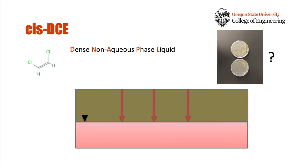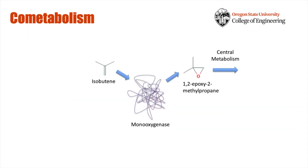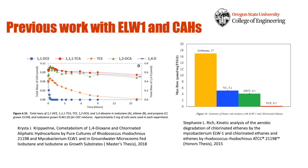So where does ELW1 come in? Remember that monooxygenase that ELW1 uses to degrade isobutene? Previous work done with ELW1 demonstrated ELW1's capability to degrade many CAHs, including CIS-DCE, via co-metabolism using this monooxygenase. So this was a nice starting place to pick back up on.